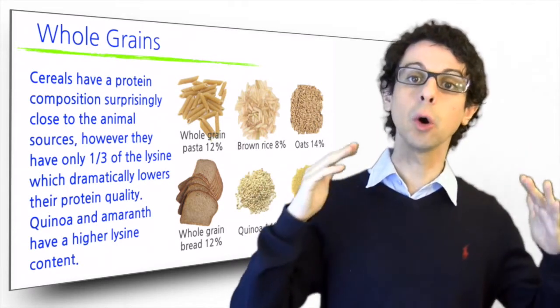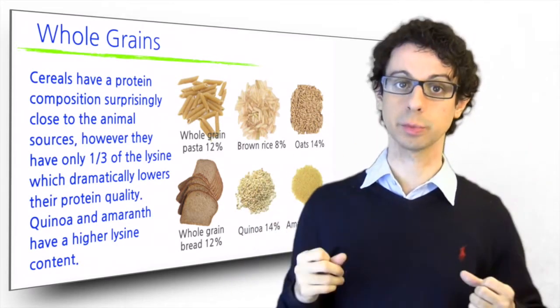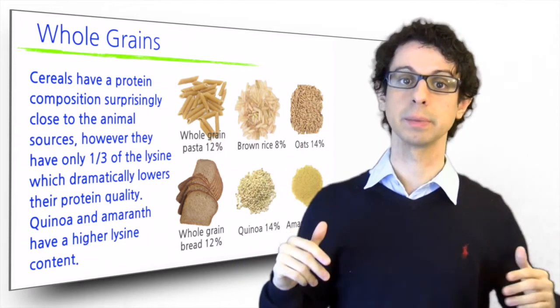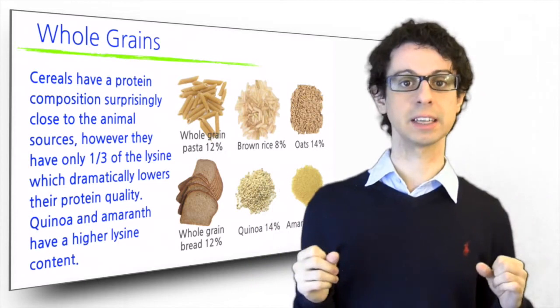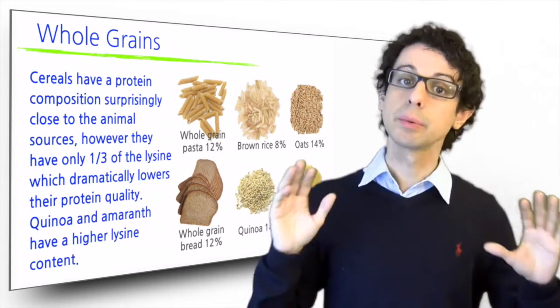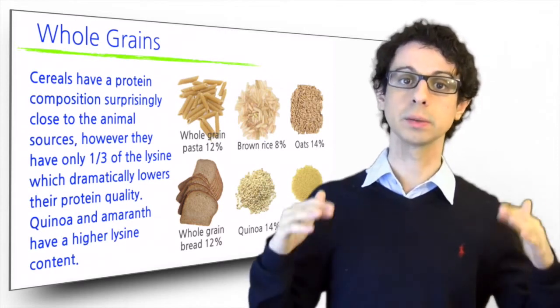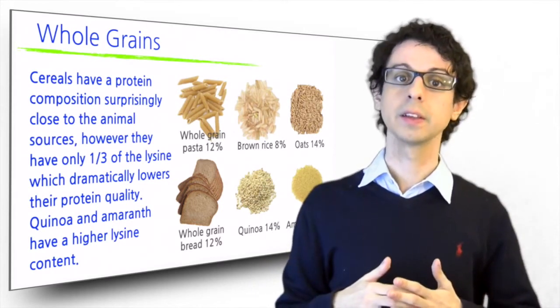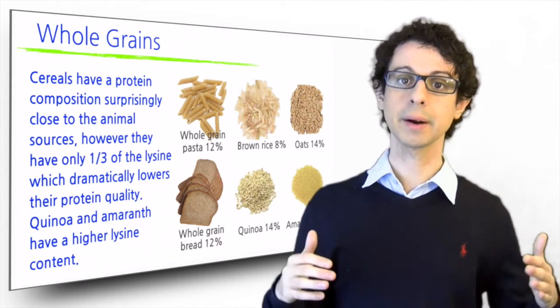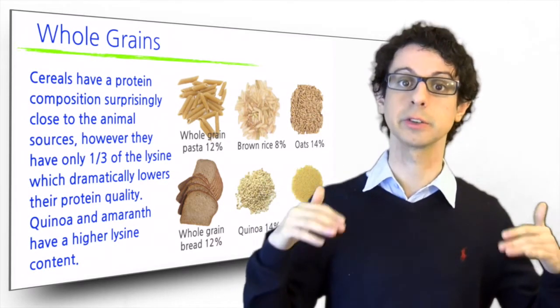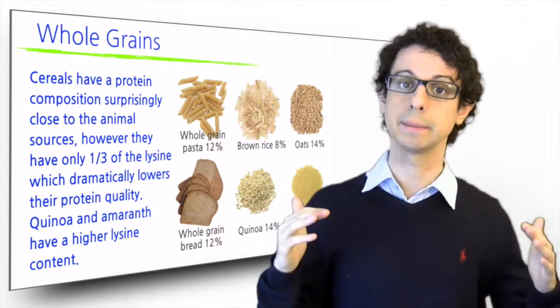This means that if we were to eat only cereals as our sources of protein, we would not be able to use most of that protein because it lacks this one essential amino acid. The protein content of whole grain cereals is between 8 and 15 percent, oats being the richest source. The pseudo cereals quinoa and amaranth also have a little bit more and they also have more lysine so their protein quality is slightly better too.